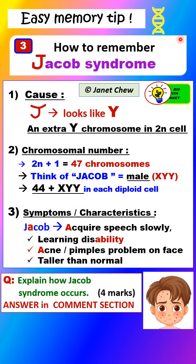The third genetic disease we'll discuss is Jacob Syndrome, after discussing Down Syndrome and Klinefelter Syndrome. Here's an easy memory tip to help you remember some important facts about Jacob Syndrome. Look at the letter J and look at the bar at the top.